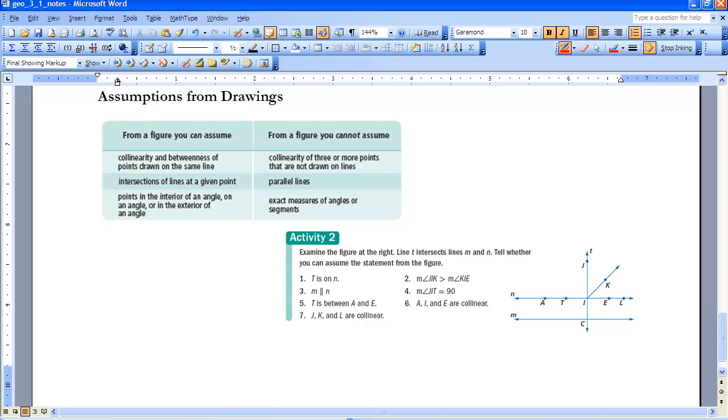Some other things you can assume. Intersection of points at a given point. Intersection of lines at a given point. So if you look here, this line T intersects line N at point I. You can see it. We can assume it.